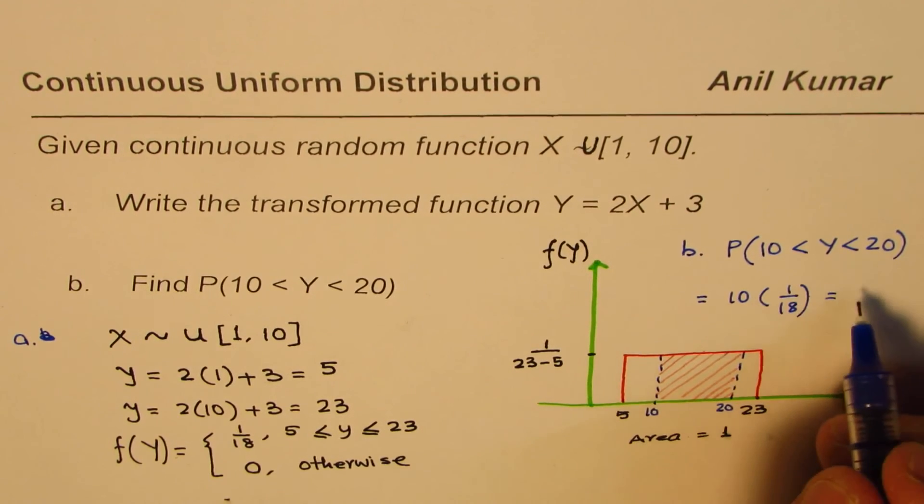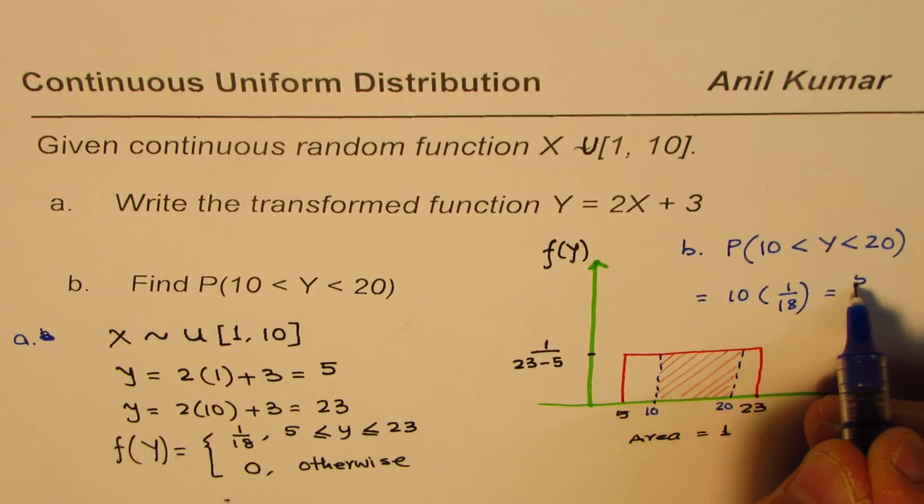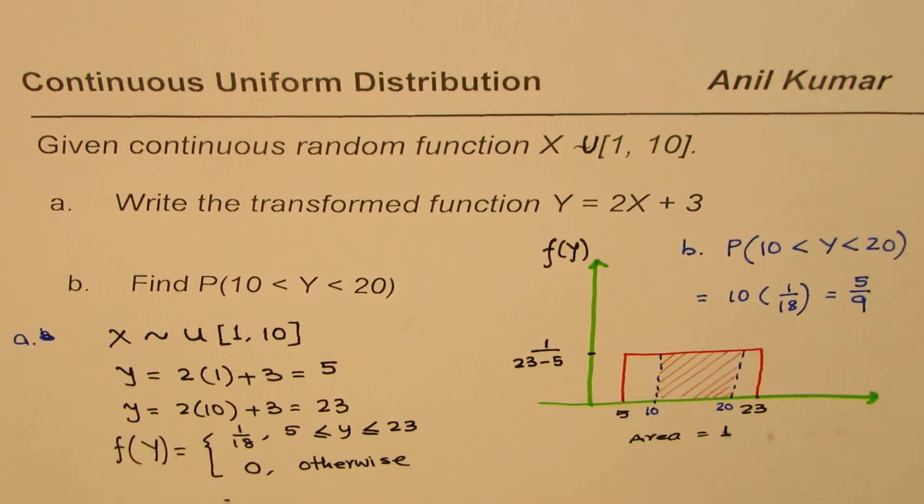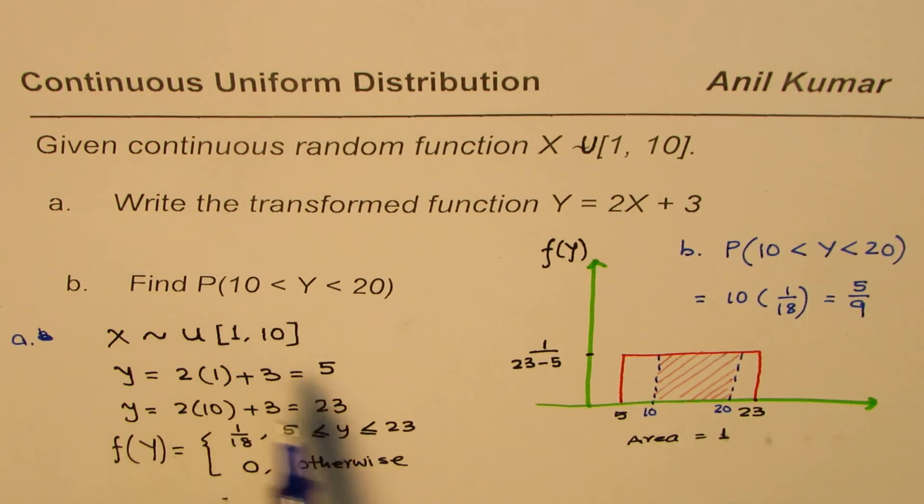The area under this curve within the interval 10 to 20, correct? So that is to say, we can simplify this, dividing by 2, we get 5 over 9. So the probability is 5 over 9, correct? So that is how you could get the probability for a uniform distribution.